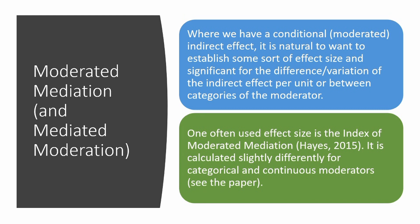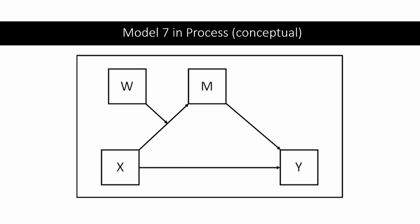One commonly used measure is the index of moderated mediation, which PROCESS automatically calculates because Hayes wrote PROCESS and also wrote the paper discussing this index. It is calculated slightly differently for categorical and continuous moderators. If you want to know more, refer to Hayes' paper. We're going to be focusing on Model 7 in the list of models available in PROCESS.